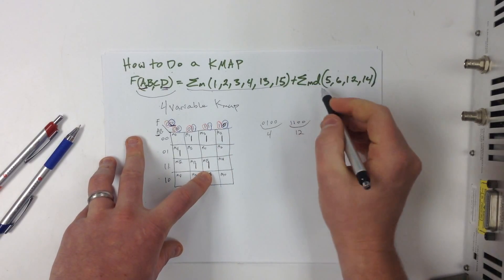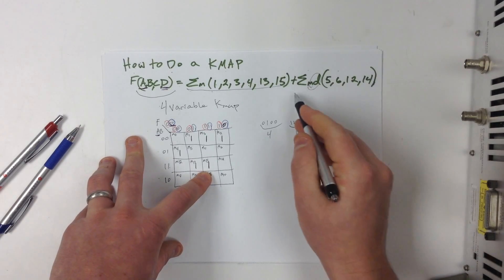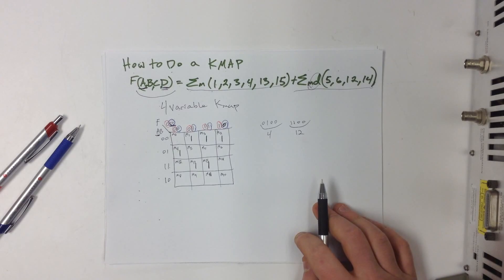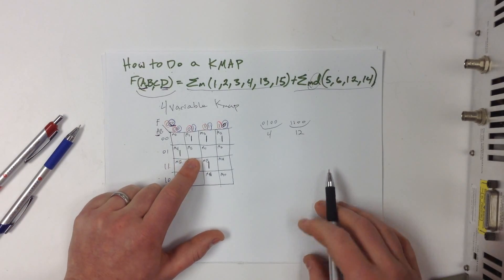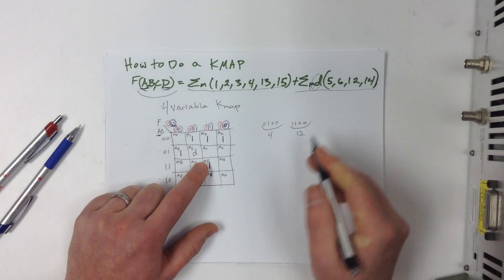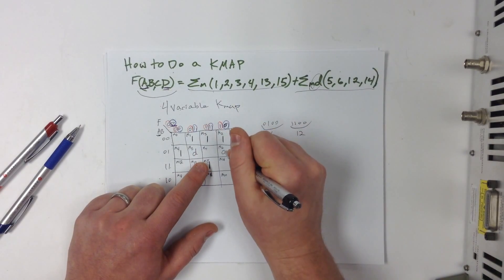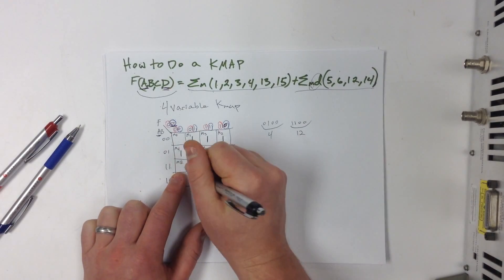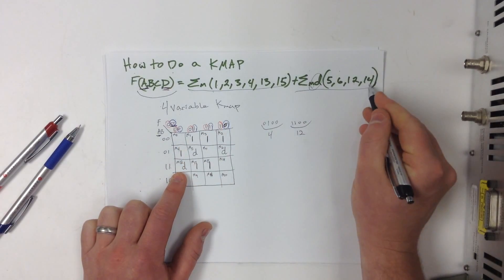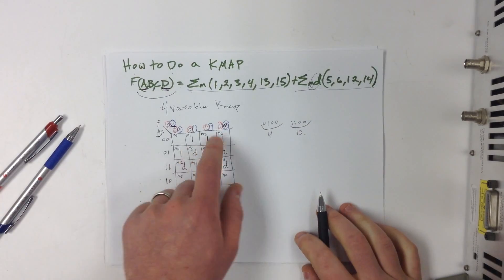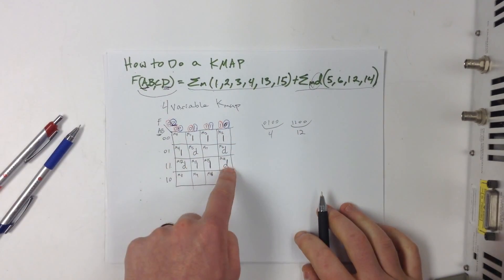Then over here, notice the D here. These are don't cares. So we can group them if we want to. We can leave them alone if we want to. We just don't care about them. They're there for our convenience, really. So we can say that this is a don't care. This one right here is a don't care. 12, where's 12 at? This is a don't care. And then 14, this is a don't care. So we have all 1's in there. We have all of our don't cares in there.